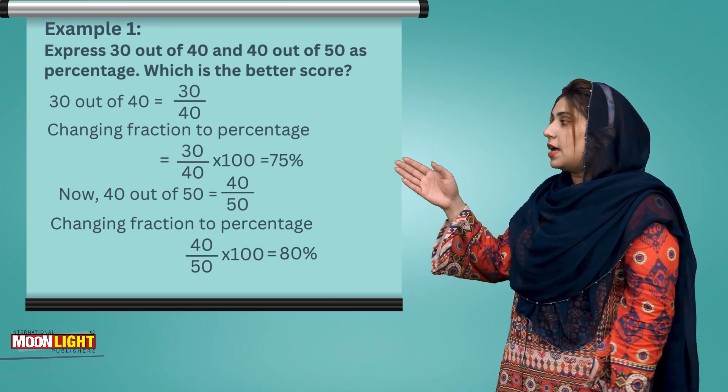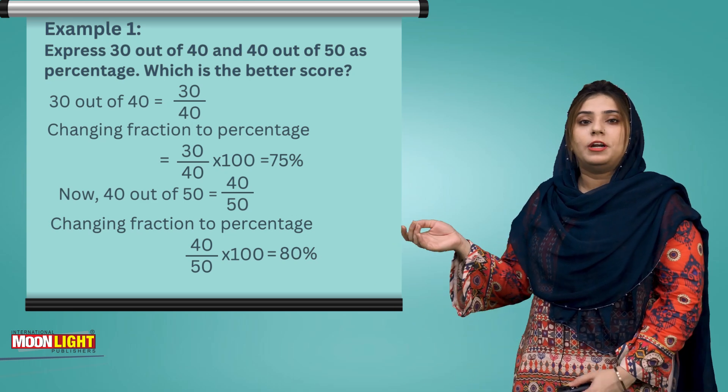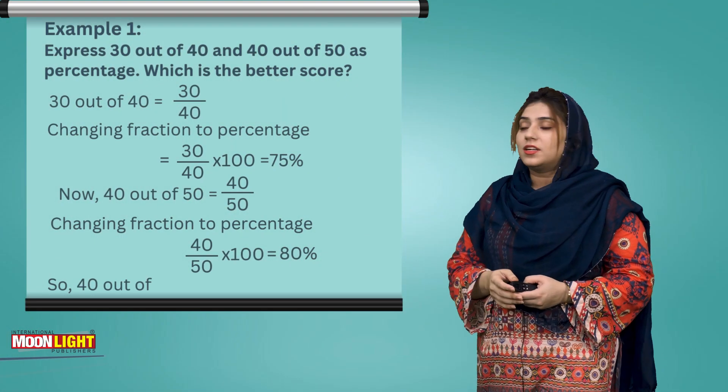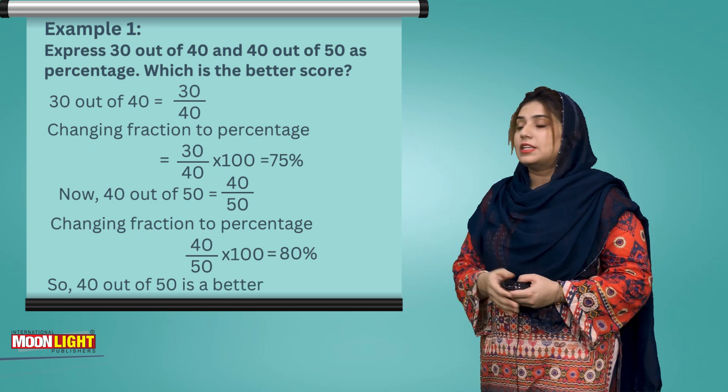Changing fraction to percentage: 40/50 times 100 equals 80%. So 40 out of 50 is the better score since 80% is greater than 75%.